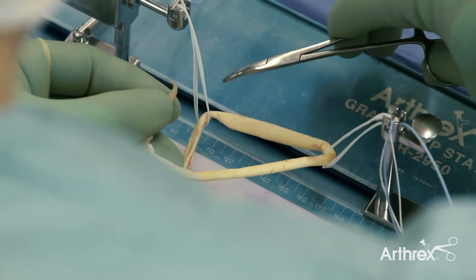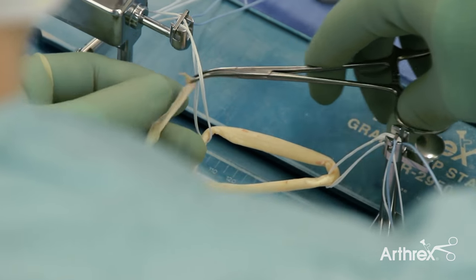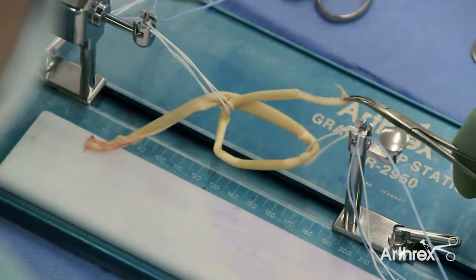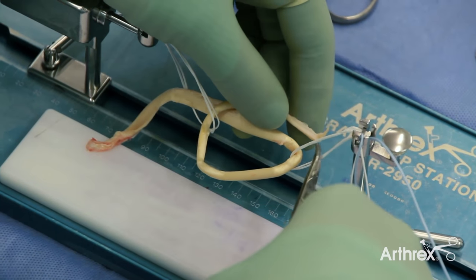The longer end is then brought back through both ACL tightropes to create a quadruple graft with two free ends.